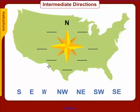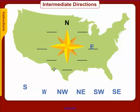There's also another type of directions called intermediate directions. Here we have another compass rose with the cardinal directions we talked about: north, east, south, and west — those are the main directions on the compass rose.